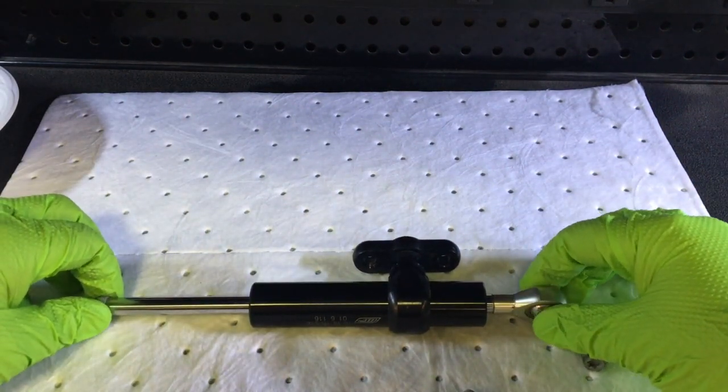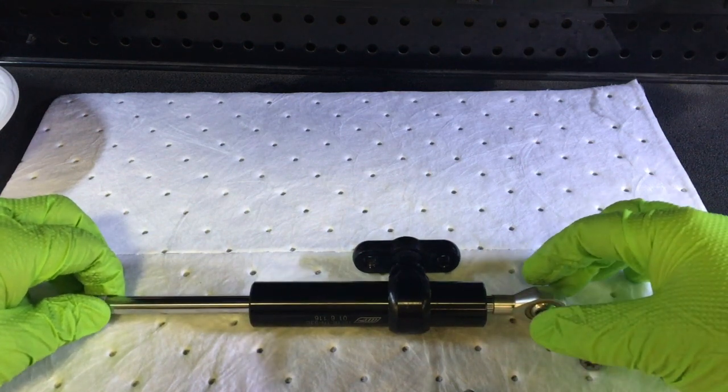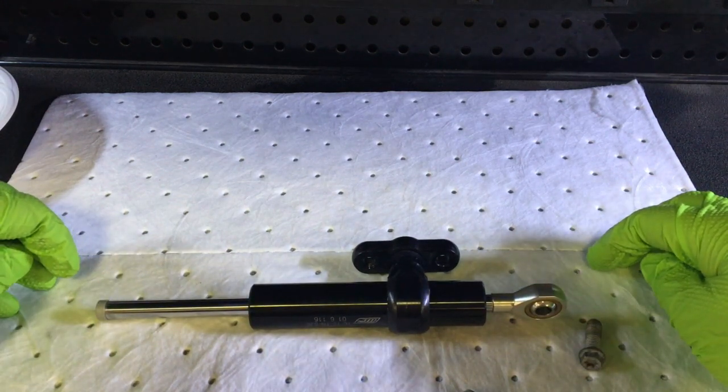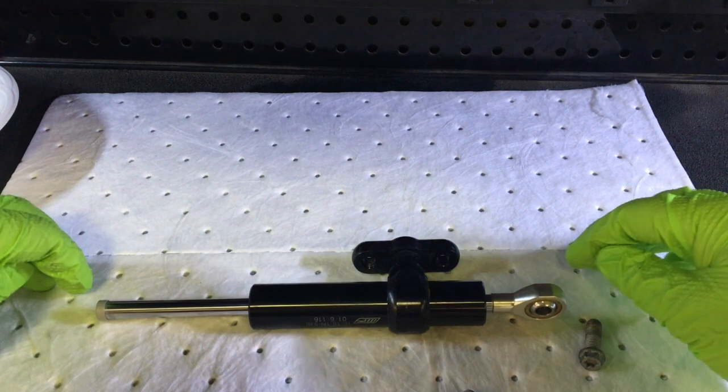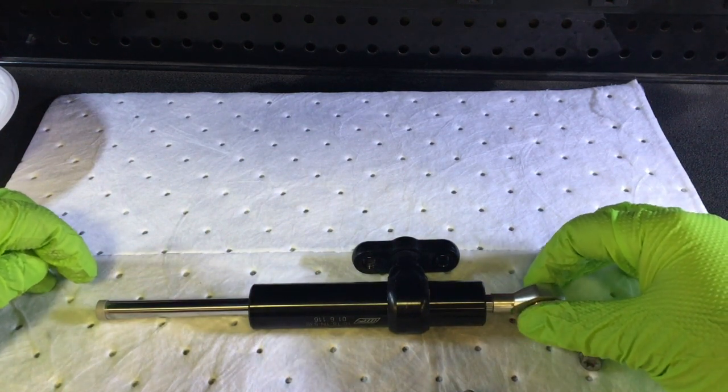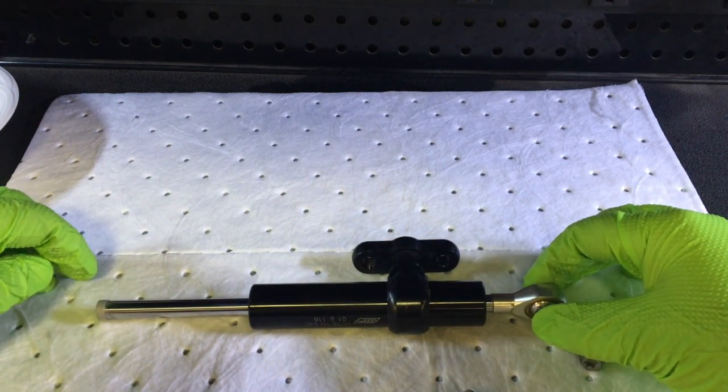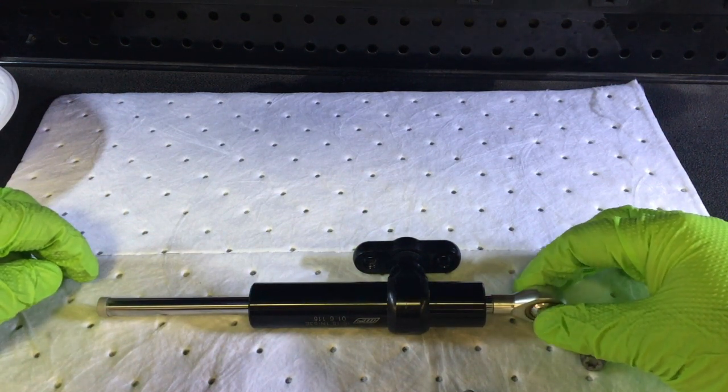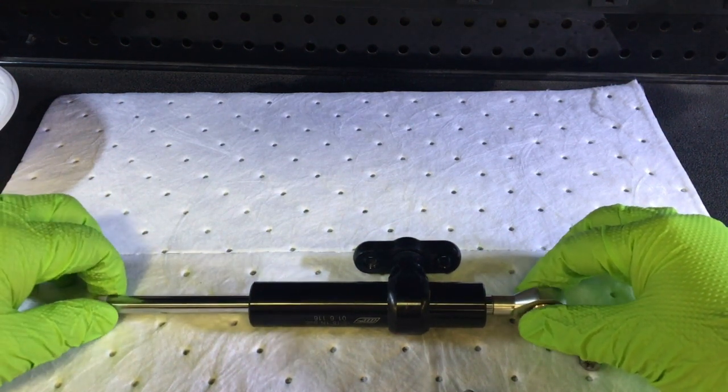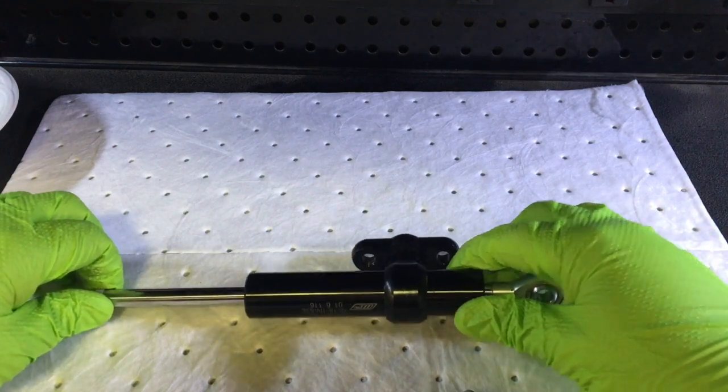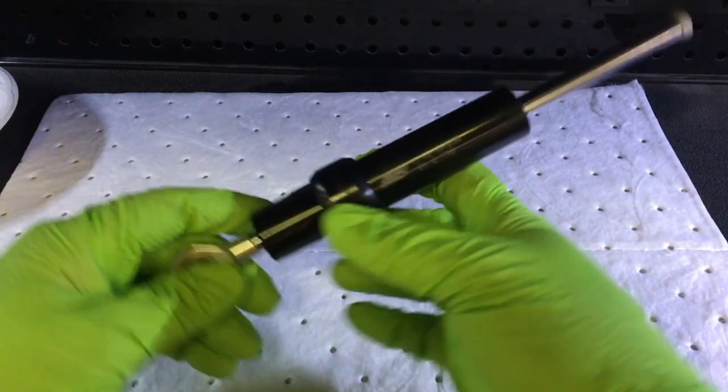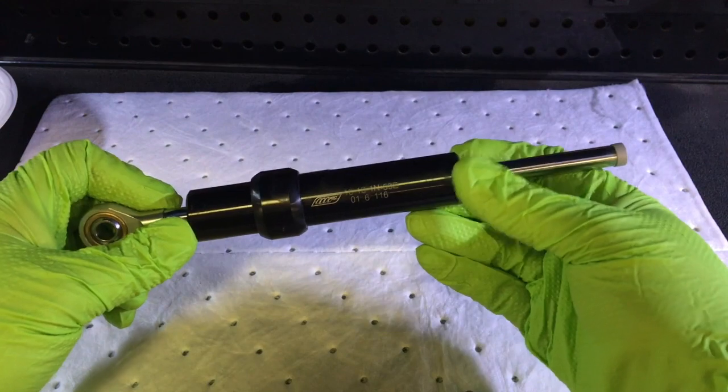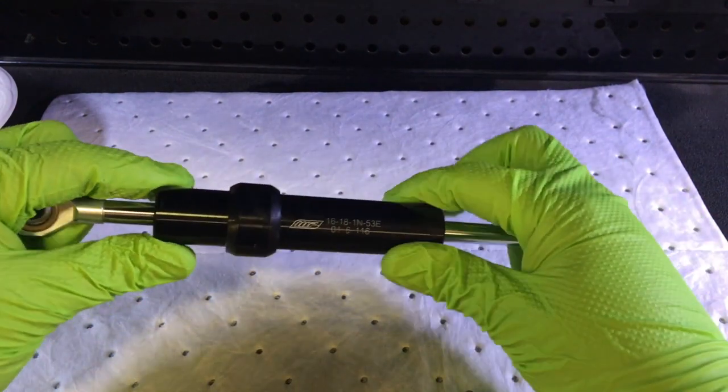Okay, today we are looking at the steering damper off of a KTM 1290 Super Adventure. These, as far as I know, are also the same part on the 1190 and the 1090, but I cannot say for sure, so don't hold me to that.